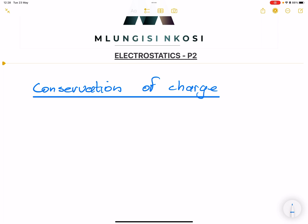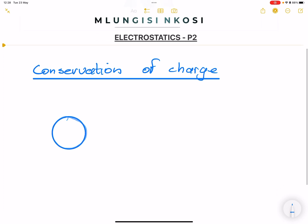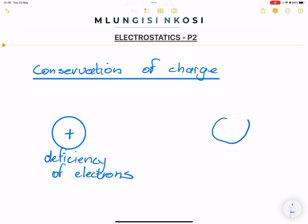Remember that a positive charge simply tells us that we've got more protons than electrons, or we can say we've got a deficiency of electrons. The reason why we talk more about electrons is because electrons are the ones that can move. When we've got a negative charge, we've got an excess of electrons.